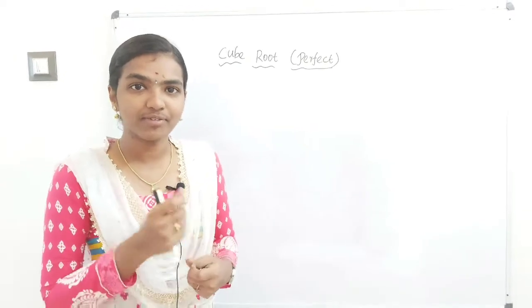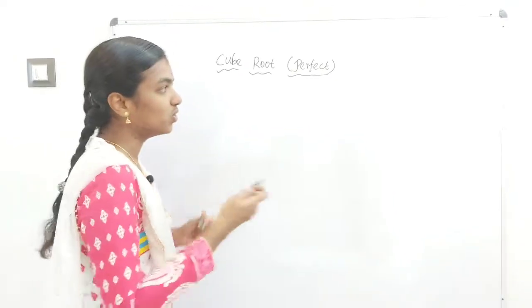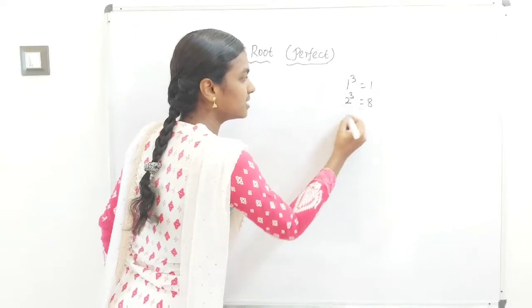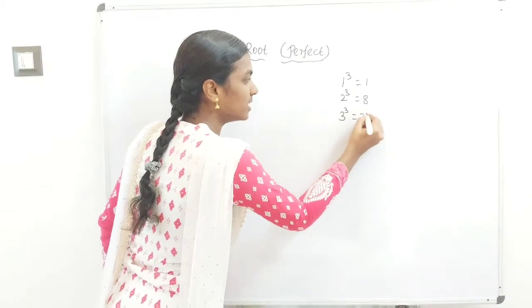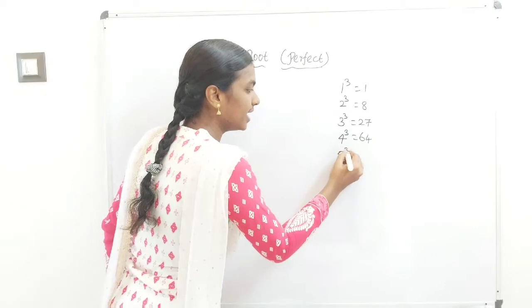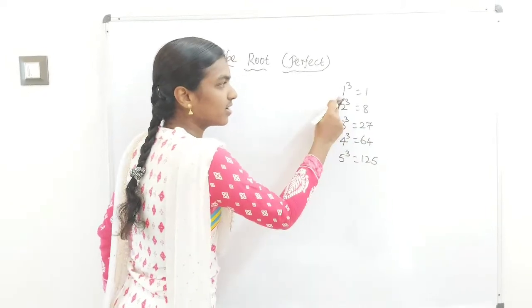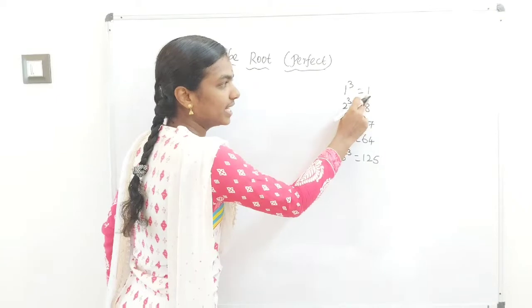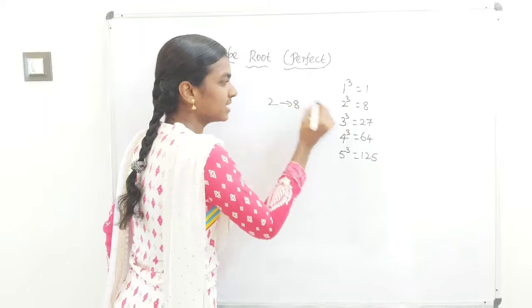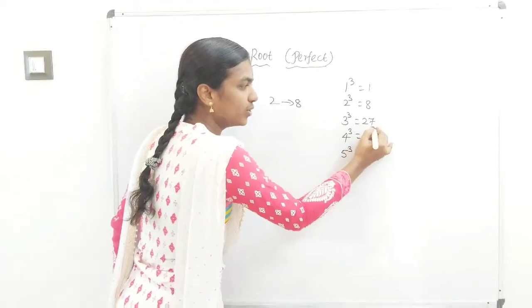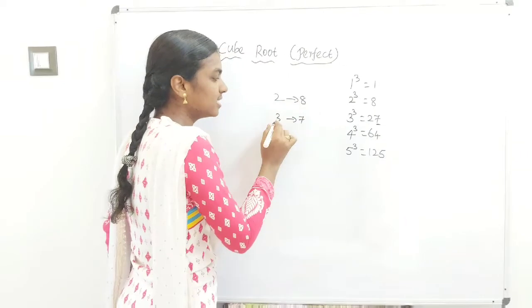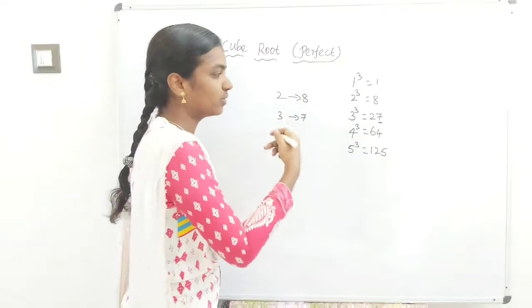Write the cubes first: 1³=1, 2³=8, 3³=27, 4³=64, 5³=125. Starting with 1 cube, the unit digit is 1. For 2 cube, the unit digit is 8. For 3 cube, the unit digit is 7. So 2 means 8, 3 means 7 - we can write this directly during questions.